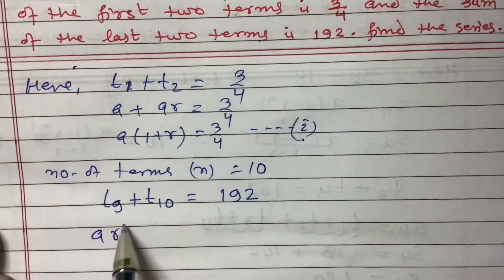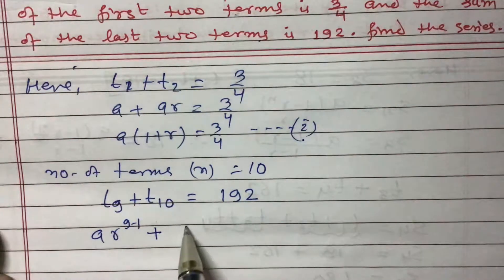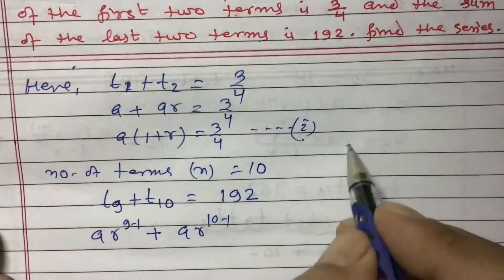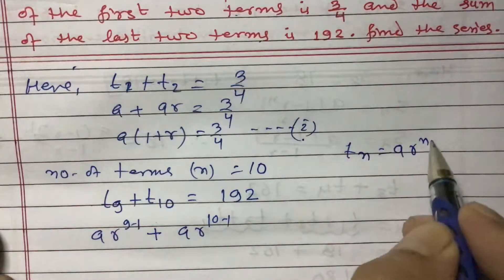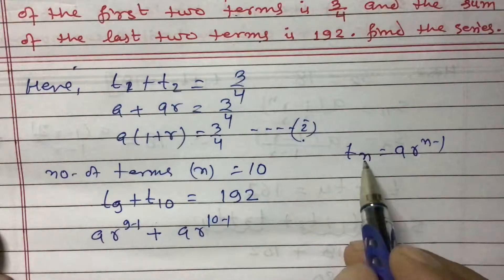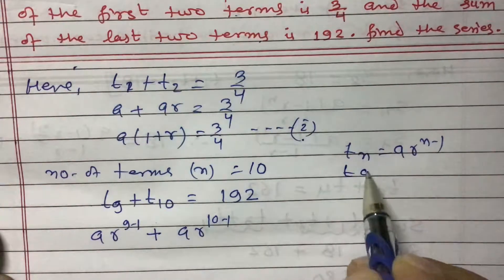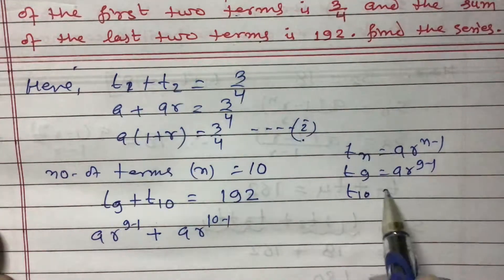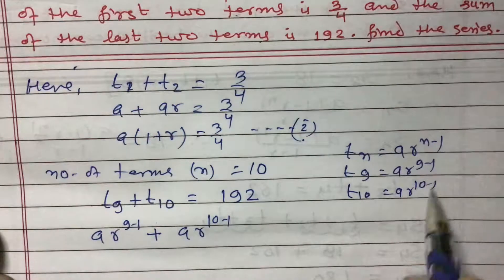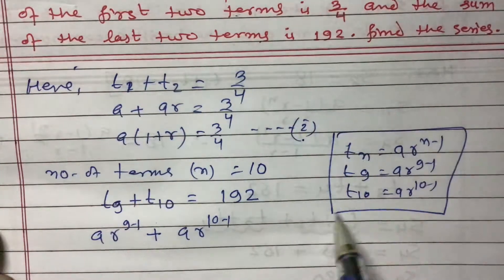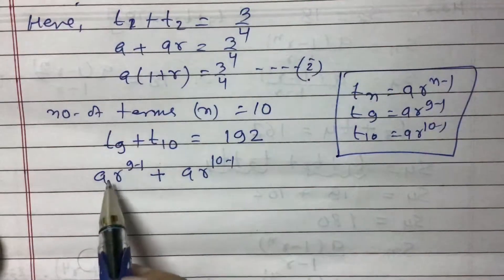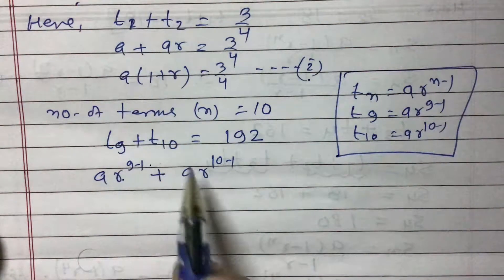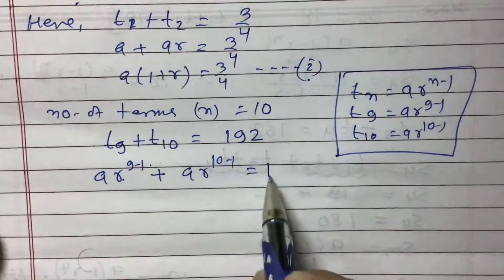Now, t9 equals ar to the power (9−1) and t10 equals ar to the power (10−1), using the general term formula tn = ar^(n−1). So t9 is ar⁸ and t10 is ar⁹. Therefore ar⁸ + ar⁹ = 192.